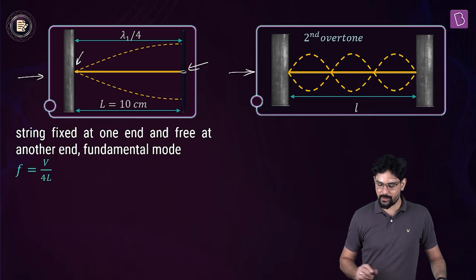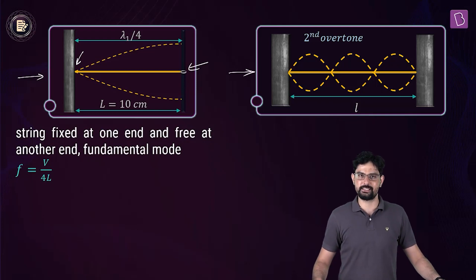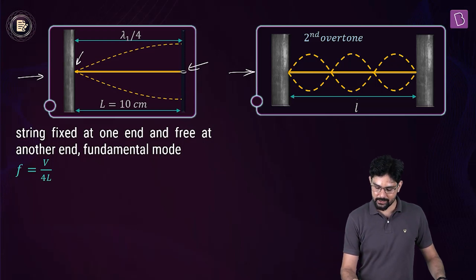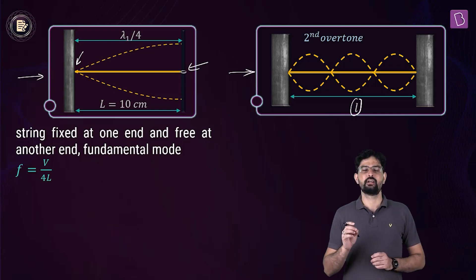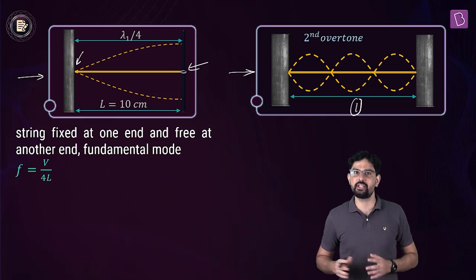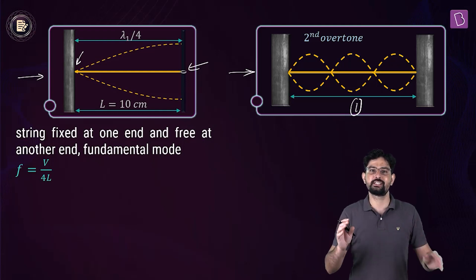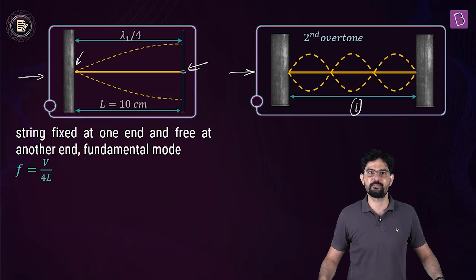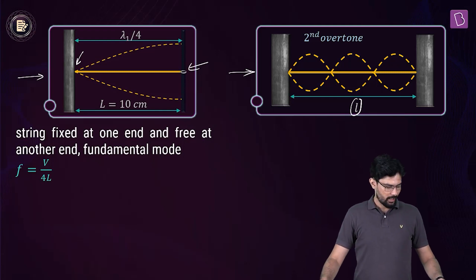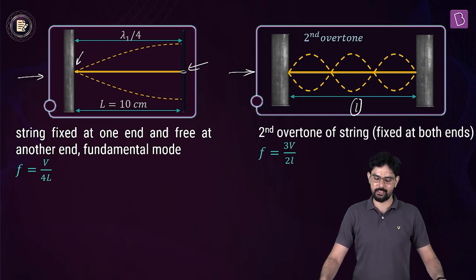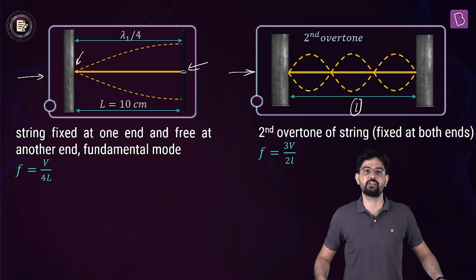Now for the string fixed at both ends, let's call its length small L. The second overtone is also the third harmonic, which has 4 nodes and 3 antinodes. The frequency of its second overtone (third harmonic) is 3V/(2L).